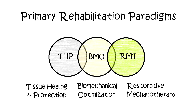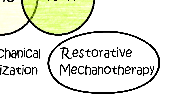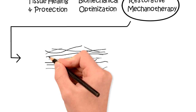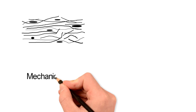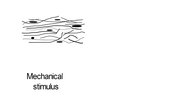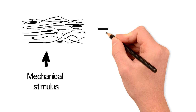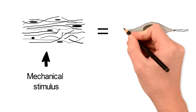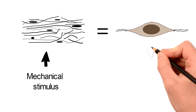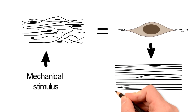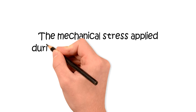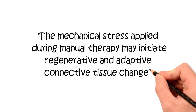I also showed how restorative mechanotherapy is one of the three primary rehabilitation paradigms. In review, restorative mechanotherapy targets poor quality connective tissue with mechanical stimuli. Tissue deformation due to mechanical stimulus results in cellular activation leading to the production of new collagen and a remodeled connective tissue that is more activity tolerant. The mechanical deformation that occurs during certain types of manual therapy may initiate cellular mediated connective tissue regeneration and adaptation.